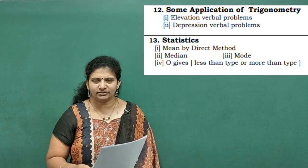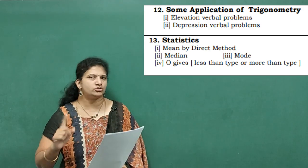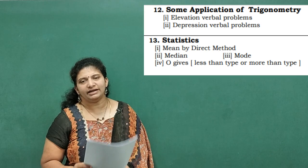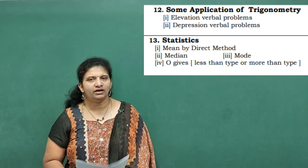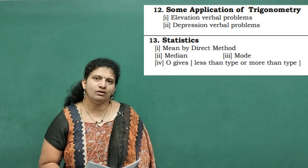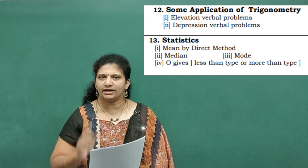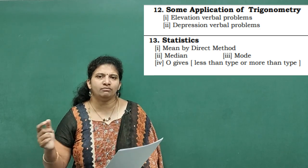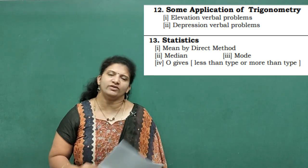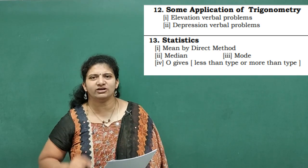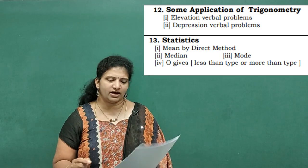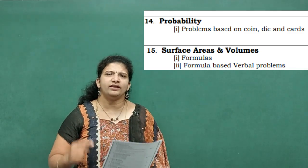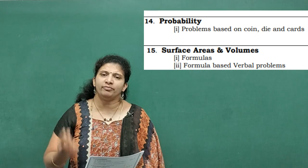Practice some problems, children; among those two, one is compulsory. Thirteenth chapter — Statistics: mean by three methods — direct method, assumed mean method, step deviation method — any one method you can choose. If they specify, go with that. Mean, median, mode, and ogive — among these four, four questions will be given with internal choice. Each question carries three marks, total six marks.